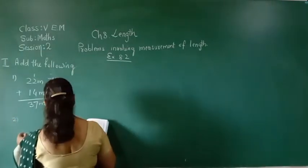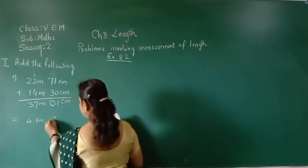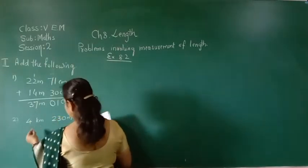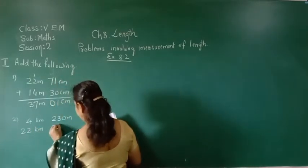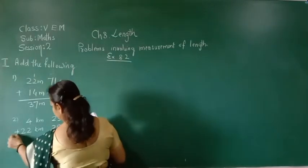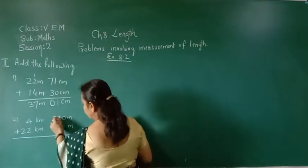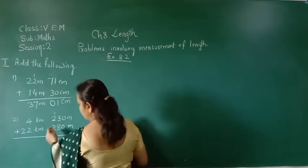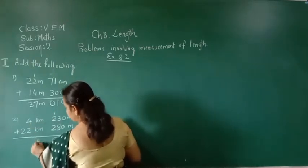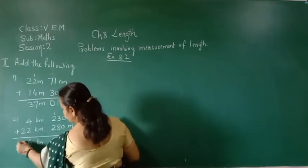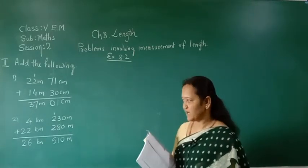Second addition: 4 kilometers 230 meters plus 22 kilometers 280 meters. Here: 0 plus 0 is 0. Then 3 plus 8 is 11, carry 1. 2 plus 2 is 4, plus 1 is 5. Then for kilometers: 4 plus 2 is 6, and this is 2. So the answer is 26 kilometers 510 meters.